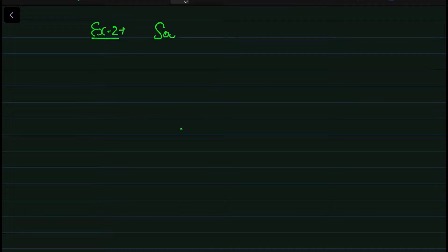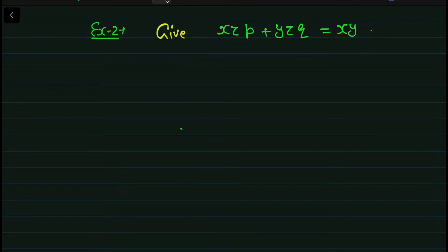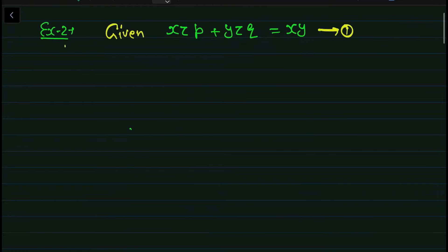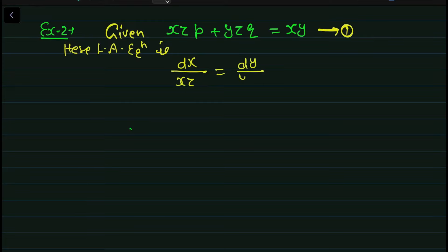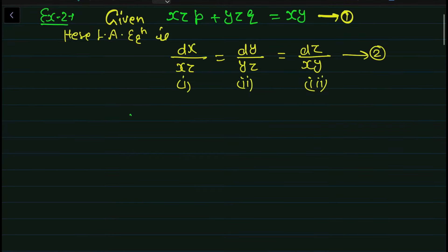Example number 2: हमें solve करना है xz·p + yz·q = xy। Solution में — equation 1। Lagrange auxiliary equation बनाते हैं: dx/(xz) = dy/(yz) = dz/(xy) — equation 2। First fraction, second fraction, third fraction। अब दो independent solutions find करने हैं।